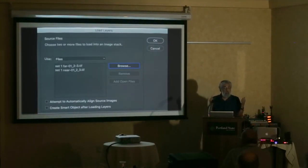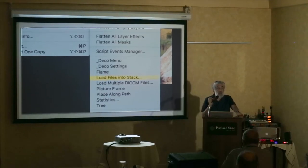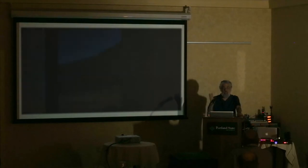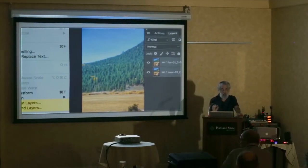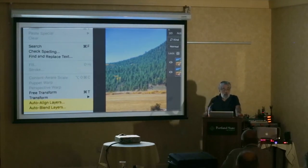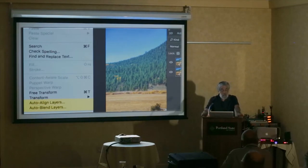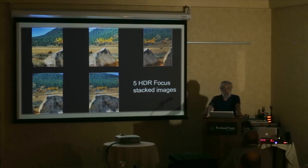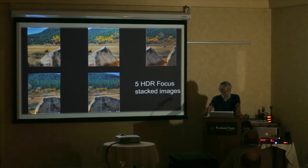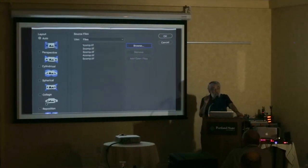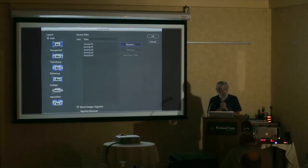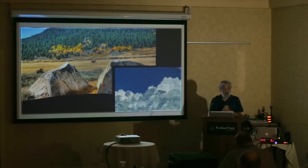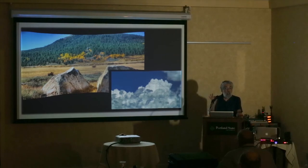Then I created focus stacks — very small ones, only two images each. Using scripts in Photoshop, you load those files into stacks, select both files now in layers, then run auto-align and auto-blend under the Edit menu. After you run that, you end up with five HDR focus-stacked images. You take those and, just like Matt was saying, you create a panorama. In Photoshop, you load them in and end up with a panorama of focus-stacked HDR images.